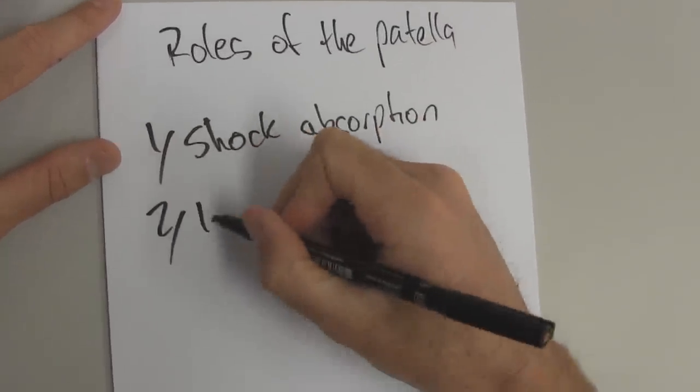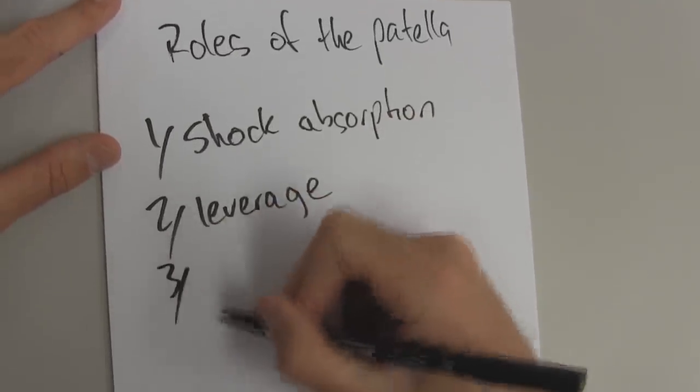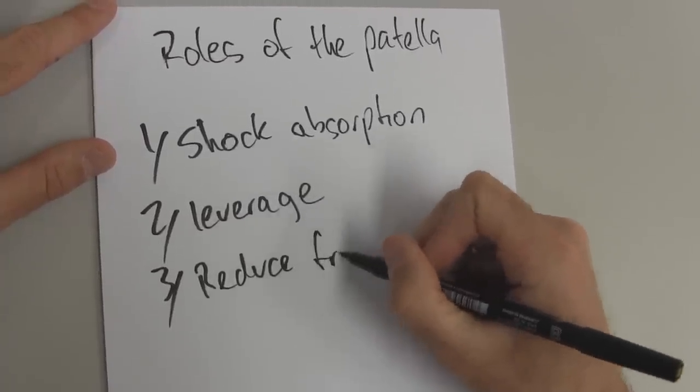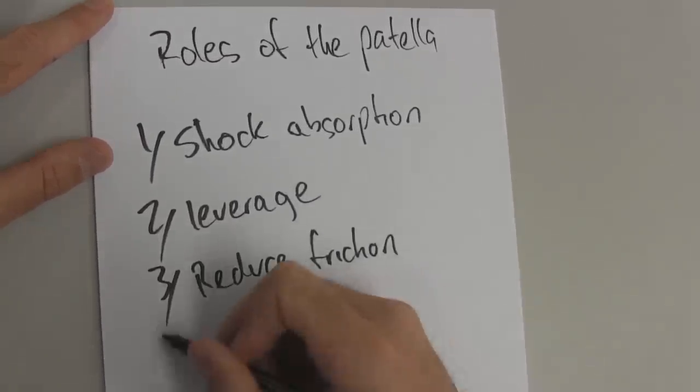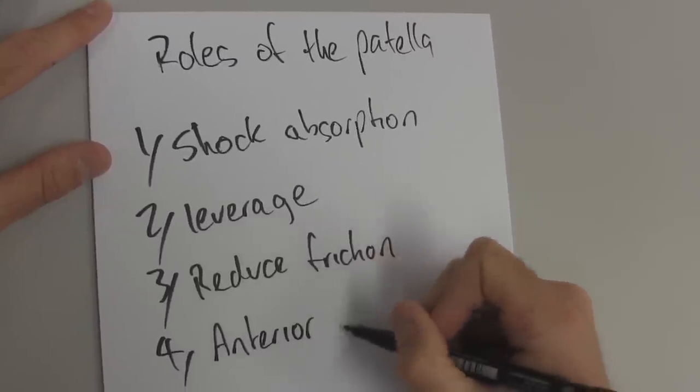Secondly, it also plays a role in leverage. Third, it reduces the friction of the joint. And fourth, it plays a role in anterior protection.